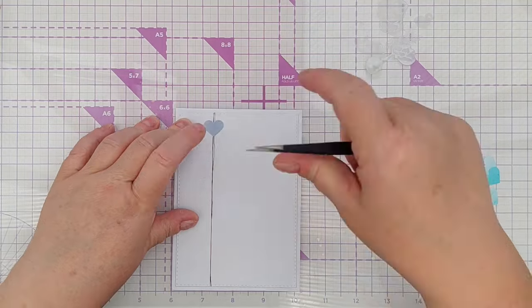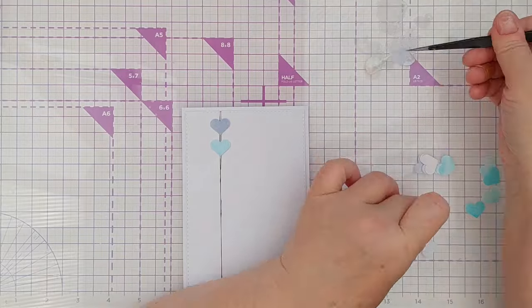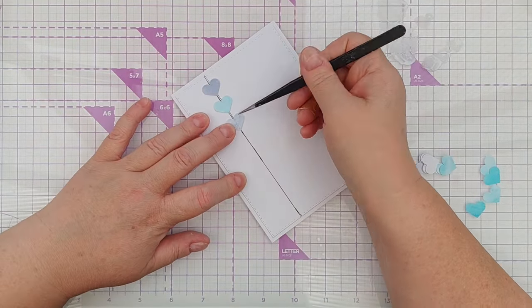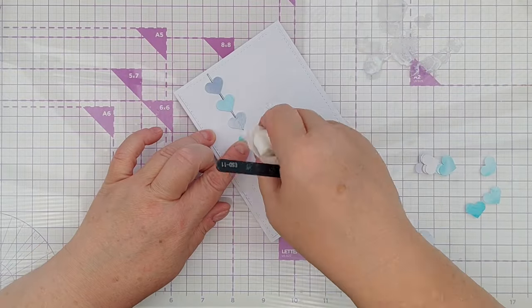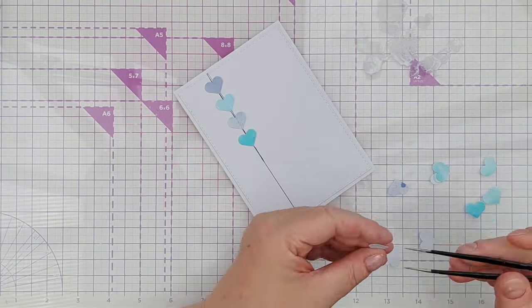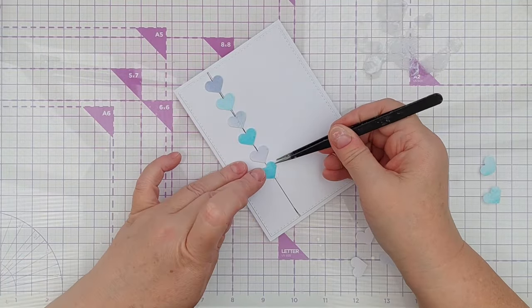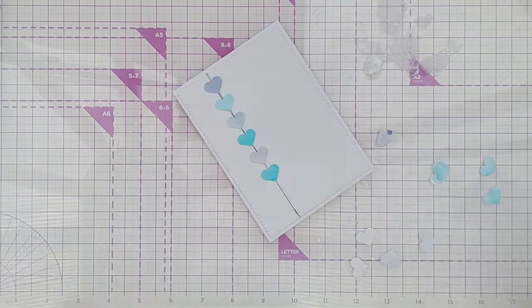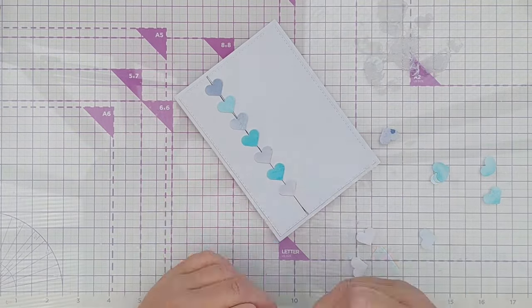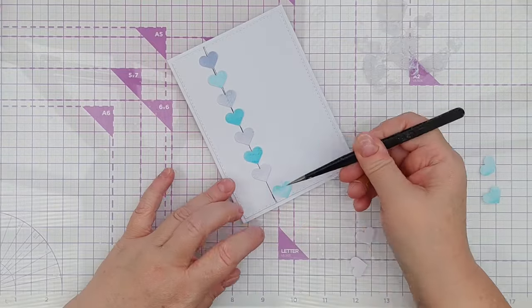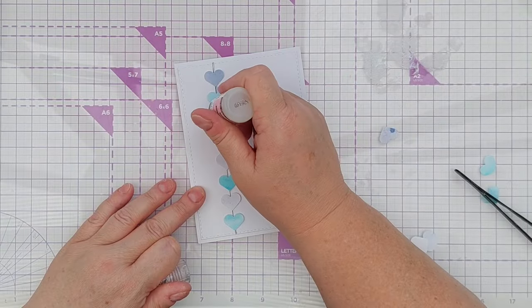I then added the hearts at regular intervals down my string alternating the blue and lilac hearts. When I got to the bottom I realized I hadn't left enough room for a gold glitter heart so I tried to remove a lilac heart but it was well and truly stuck. So I just decided to add the glitter heart over the top of the lilac heart and that turned out pretty well because it added a nice little bit of extra dimension. I then added even more dimension and some shine with the glossy accents as I said earlier.